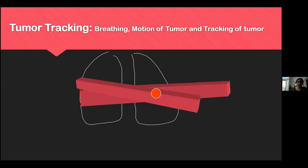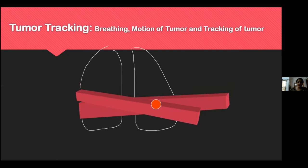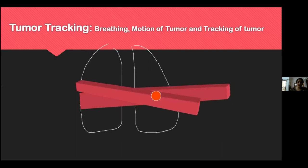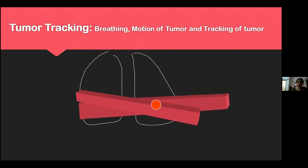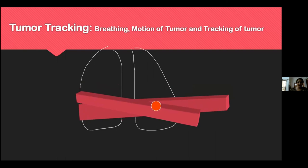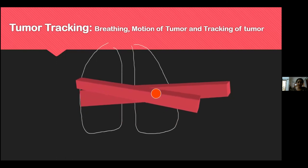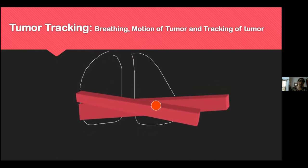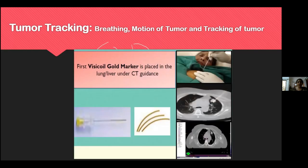Tumor tracking is an alternative where the beam tracks the tumor in real time — tracking breathing and tumor motion continuously. The beam remains on but moves with the tumor. To do this, radiopaque markers are often placed inside the tumor using an interventional procedure.